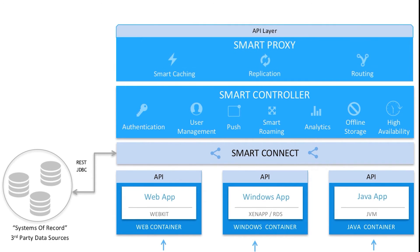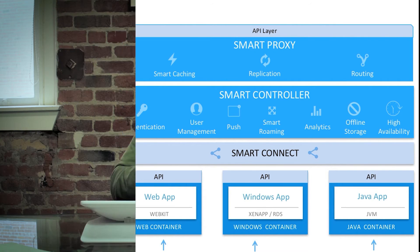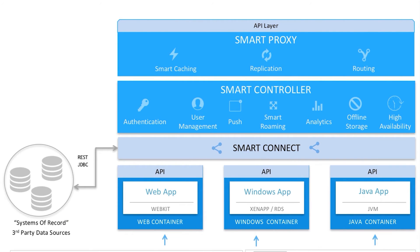Above that is our Smart Proxy, which is in charge of delivering data to the end user. The Smart Proxy is designed to be distributed, so if you have a geographically distributed workforce, you can distribute Smart Proxies to different locations so users are always near the data they're accessing. It handles routing, caching so we don't have to re-request data unnecessarily, and replication so you can scale out multiple proxies and they'll always be up to date with the latest data.